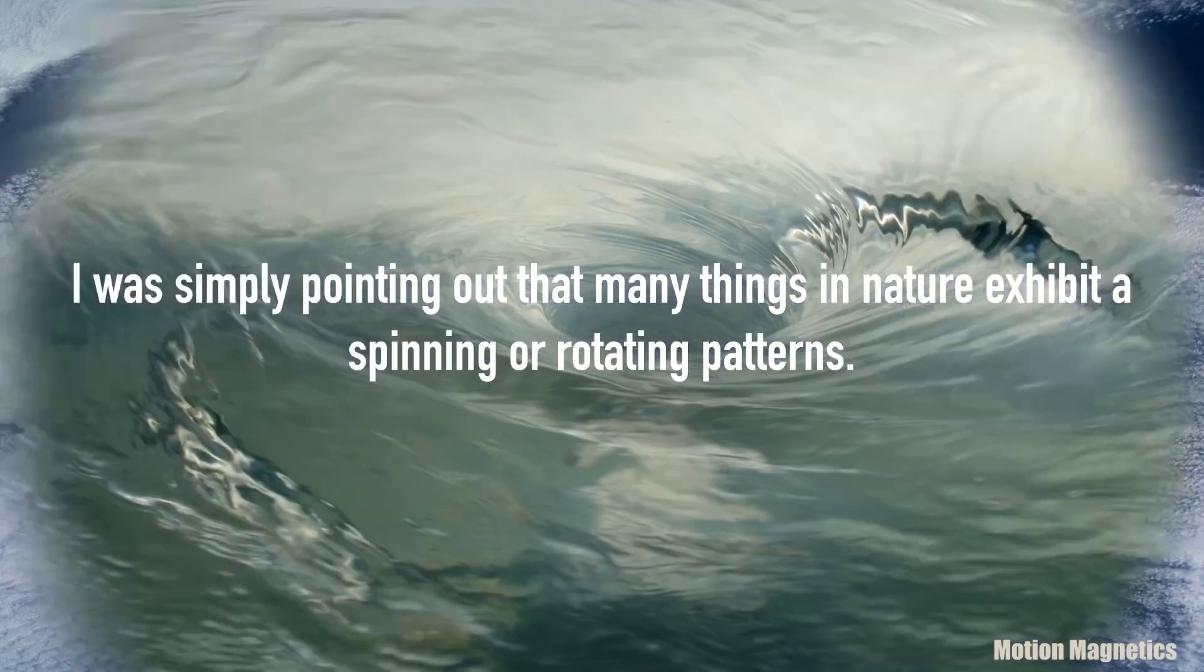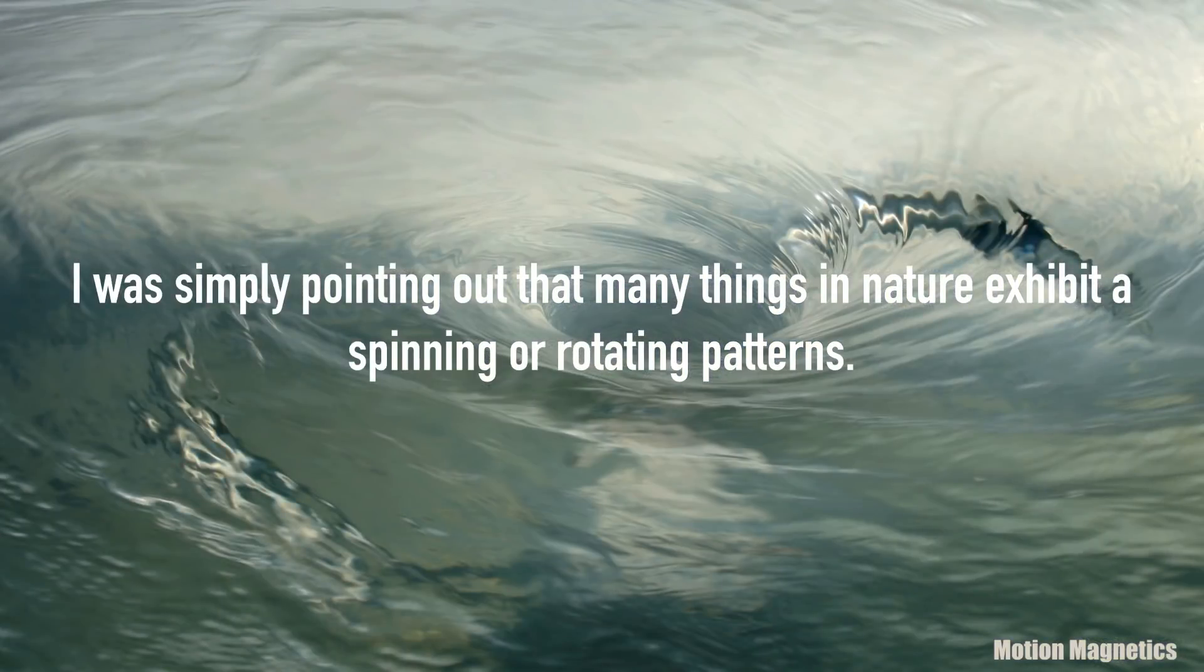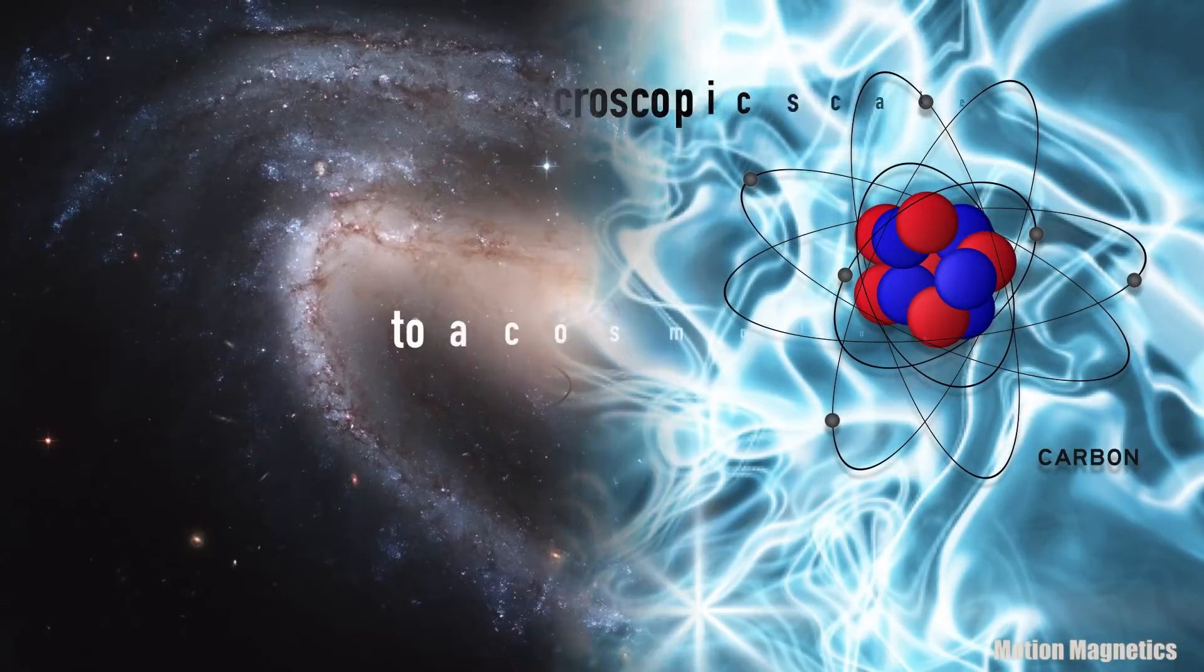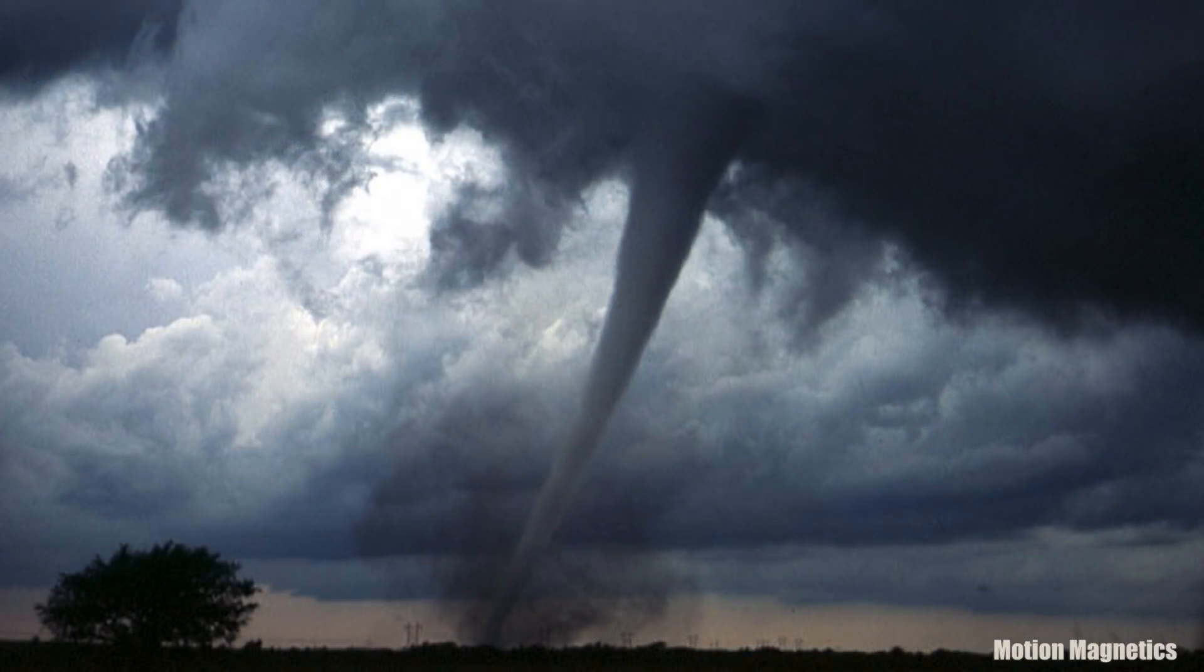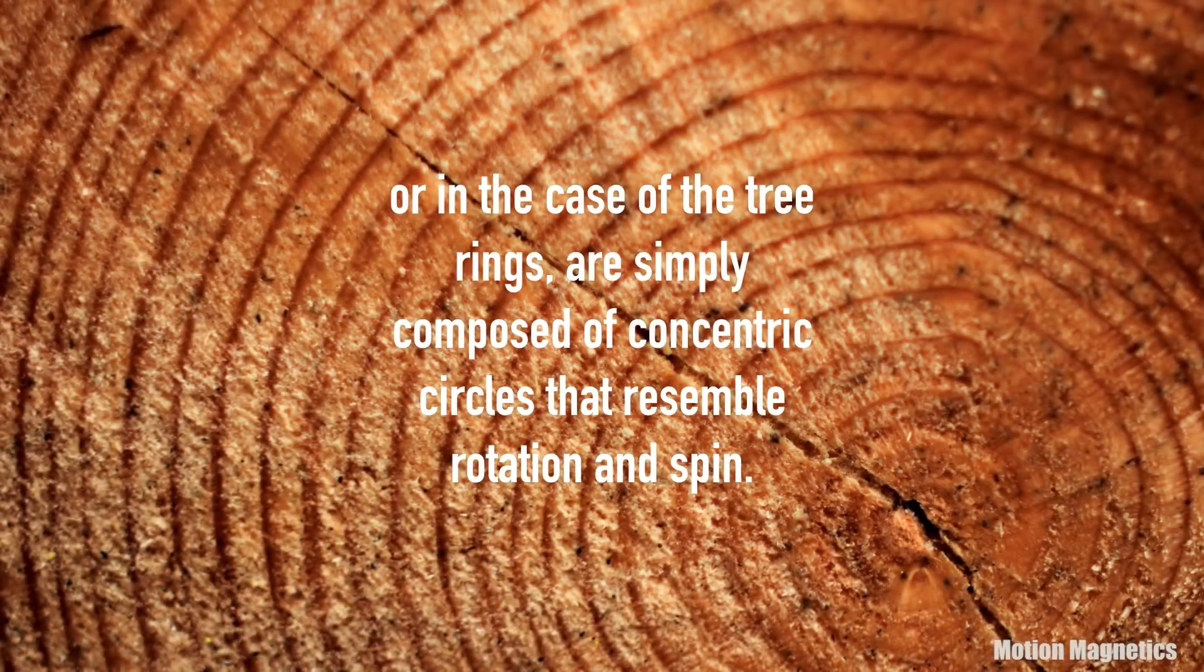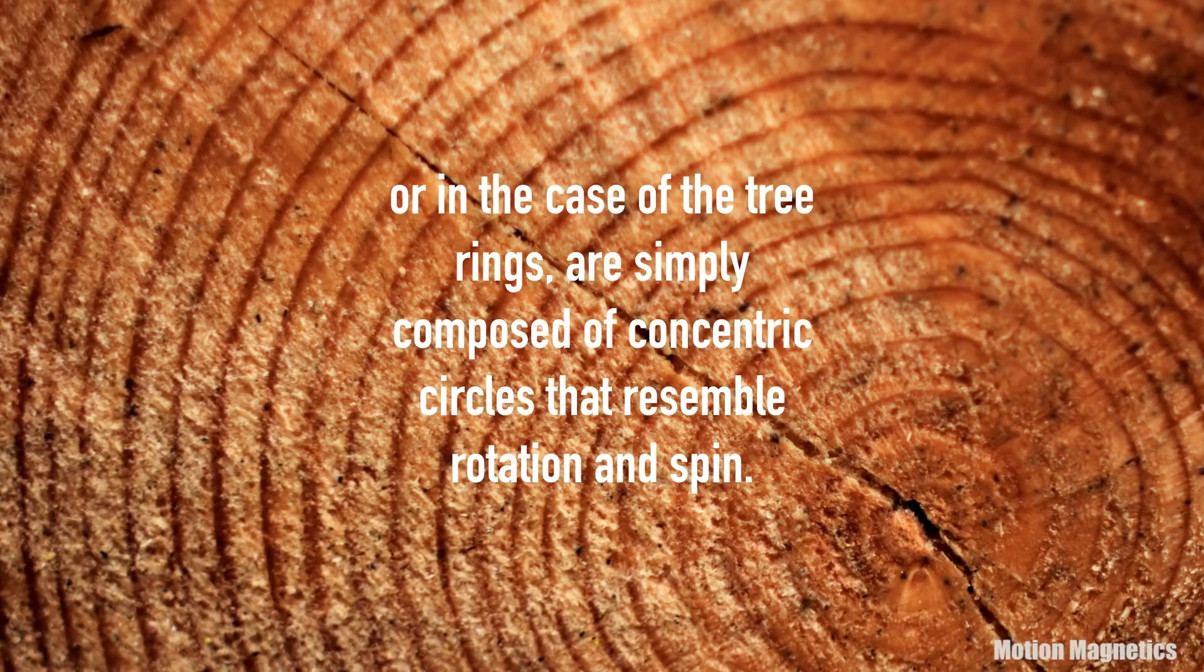I was simply pointing out that many things in nature exhibit spinning or rotating patterns. From a microscopic scale to a cosmological scale, many objects in nature rotate, exhibit spin patterns, or, in the case of the tree rings, are simply composed of concentric circles that resemble rotation and spin.